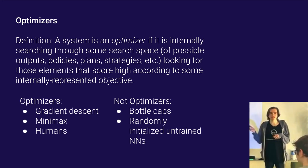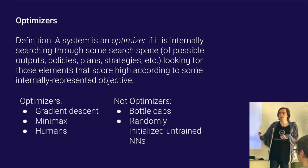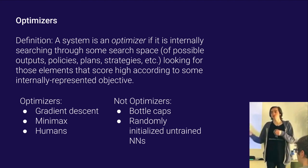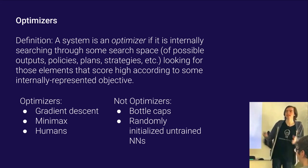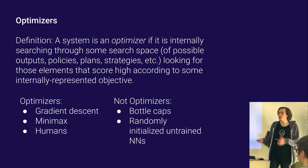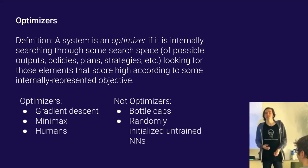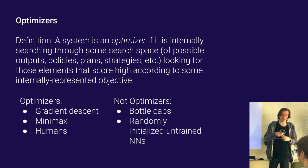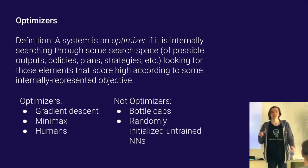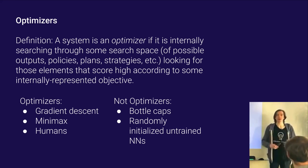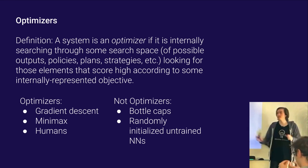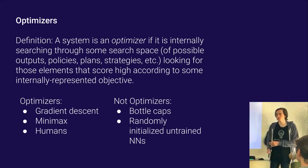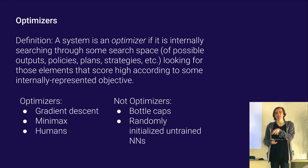Gradient descent is an optimizer because it looks through possible algorithms to find those that do a good job empirically on the loss. A minimax algorithm is an optimizer — it looks for moves that do a good job at playing the game. Humans are optimizers. Things that are not optimizers: a bottle cap is not an optimizer. You could take a bottle of water — it keeps the water in the bottle — but that's not because the bottle cap is doing optimization. We did an optimization procedure to produce the bottle. Similarly, gradient descent by default does an optimization procedure over the space of algorithms and produces a neural network that is not necessarily itself doing optimization.